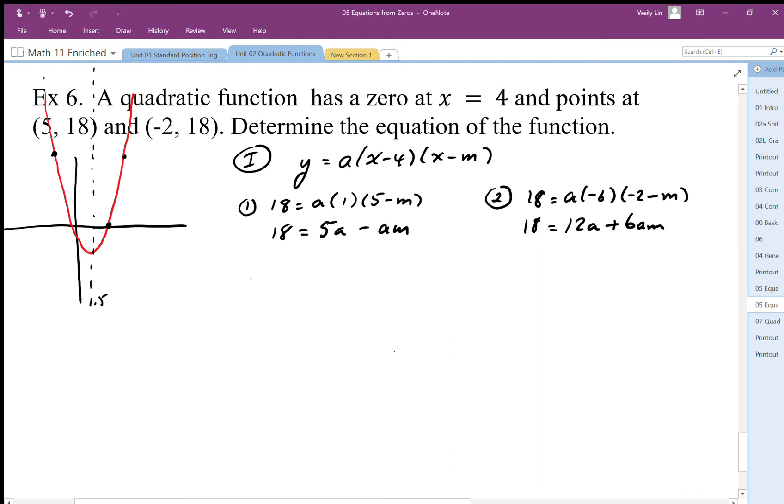I'm going to start with equation two and I'm going to add equation one. I'm going to multiply this by 6 so I end up with 108 equals 38a minus 6am. Add those together, I get 126 equals 42a, and that allows me to solve for a.